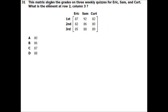Alright, this says the matrix shows the grades on three weekly quizzes for Eric, Sam, and Kurt. What is the element at row 2, column 3? So remember, rows go across, columns go up and down. So here's row 2, here's column 3. So it would be 8.